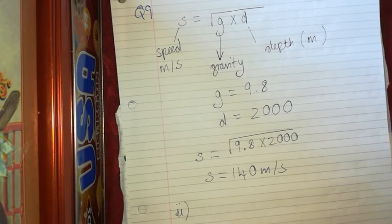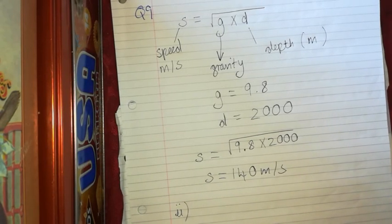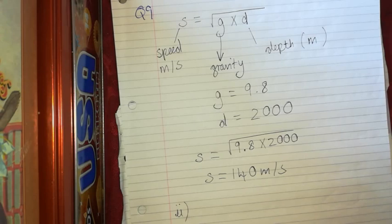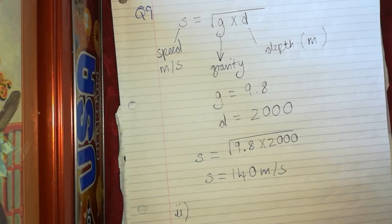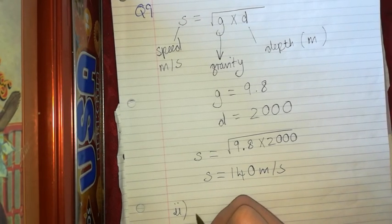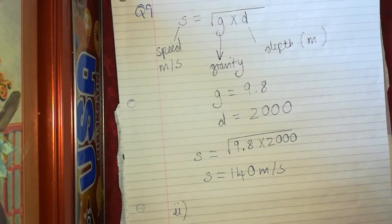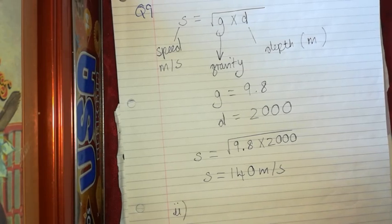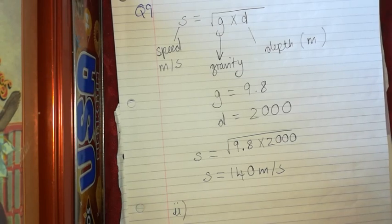And then part two, a tsunami has been identified as being 400 kilometers from land. So how long will the tsunami take to reach land? The depth of the ocean at that point is given.